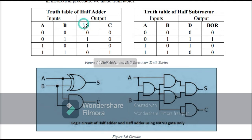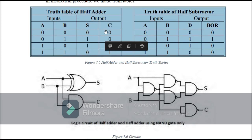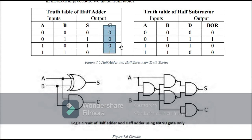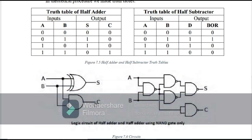For the sum output, when both inputs are the same — 0,0 and 1,1 — the output is 0. When the inputs are different — 0,1 and 1,0 — the output is 1. So we use an XOR gate for the sum. For the carry output, the output is 1 only when both inputs are 1,1, so we use an AND gate for carry.